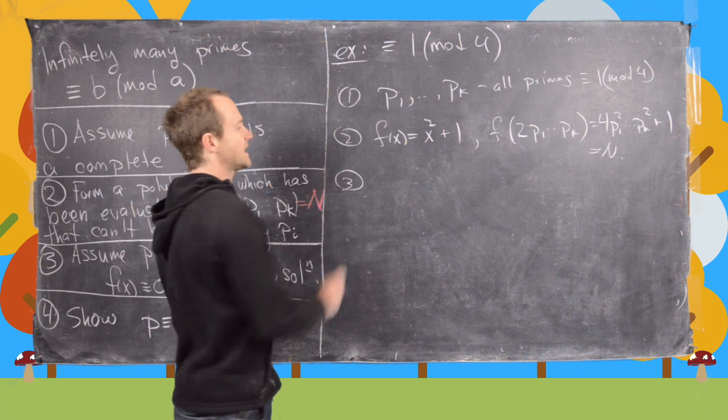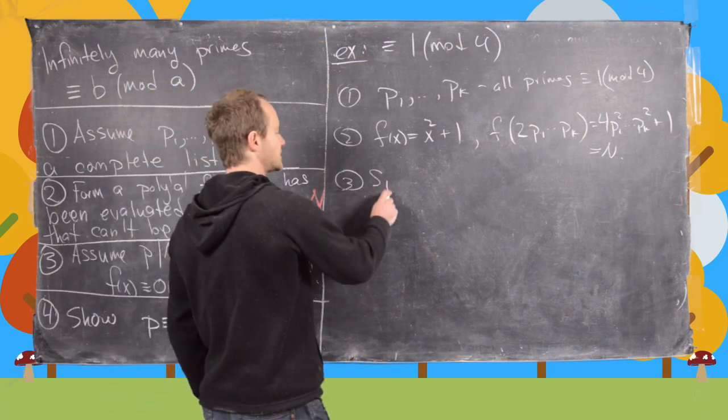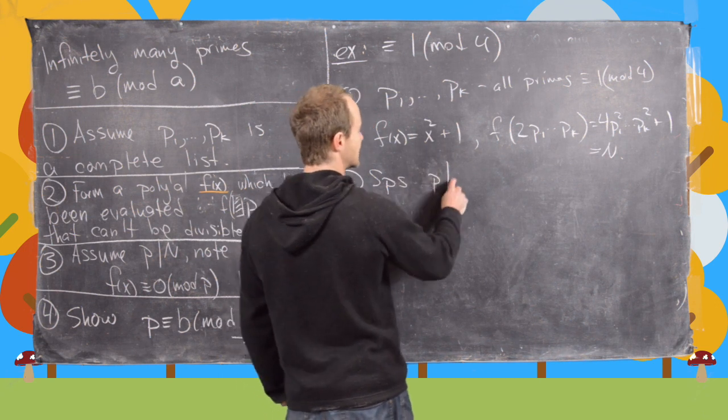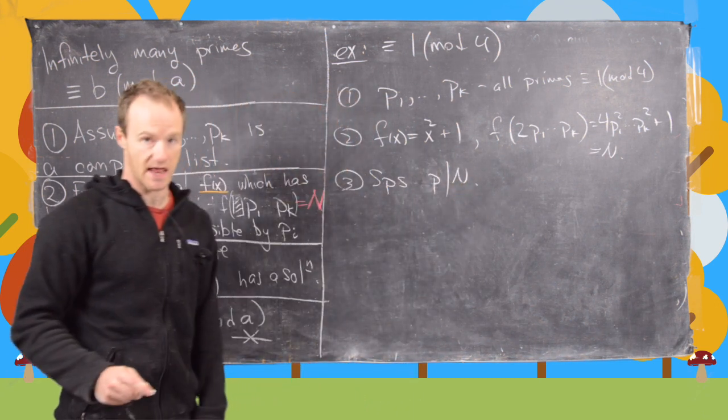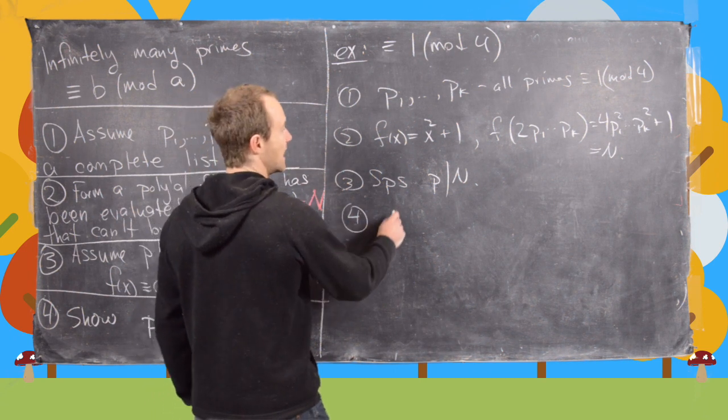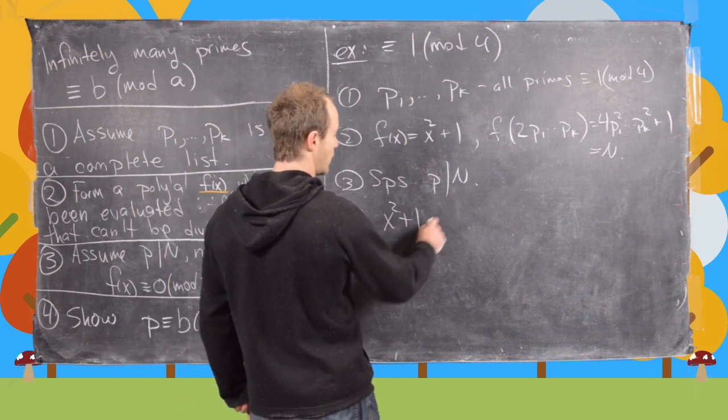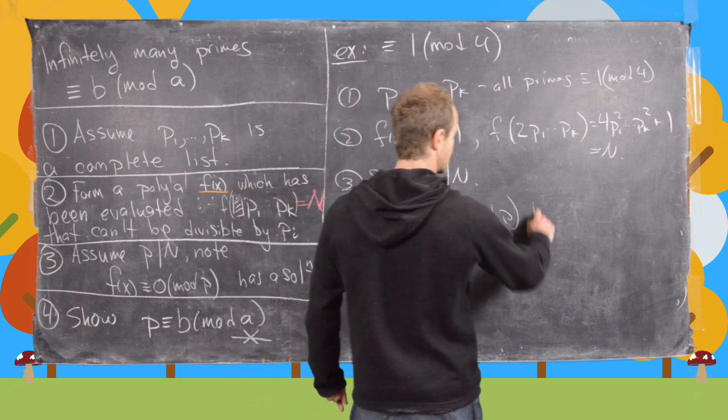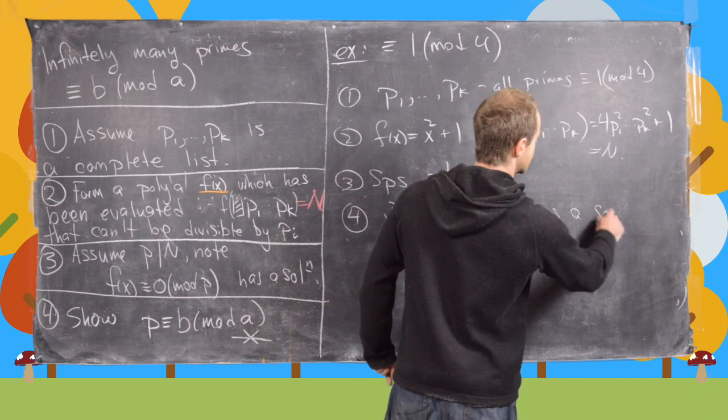Now the next thing that we can do is suppose n divide, sorry suppose p is a new prime that divides n, but what that tells us is that x squared plus 1 congruent to 0 mod p has a solution.